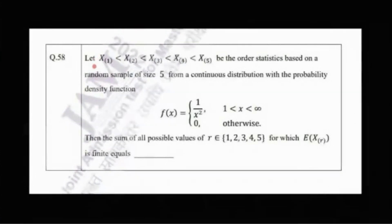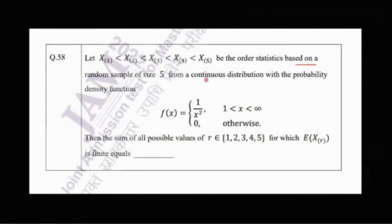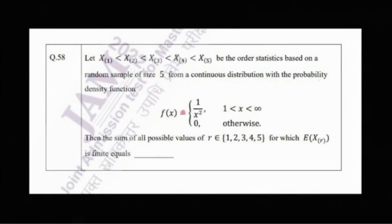The problem says that let X_(1), X_(2), X_(3), X_(4), X_(5) be the order statistics based on a random sample of size 5 from a continuous distribution with probability density function f(x) = 1/x² if x lies between 1 and infinity, and 0 otherwise.